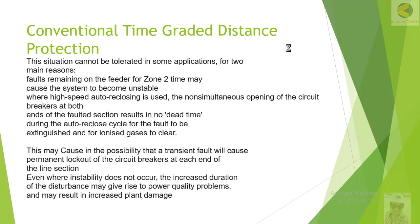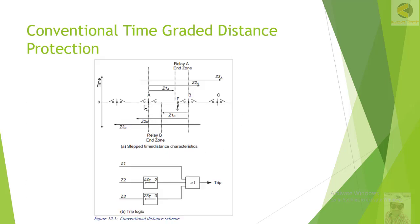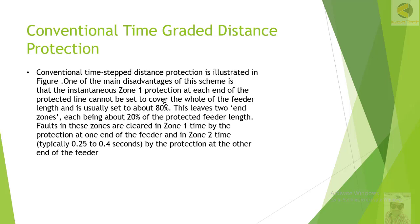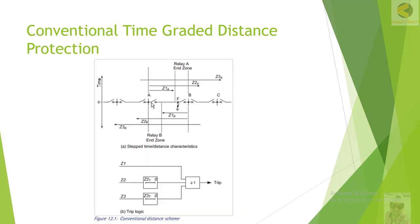Here you can see Zone 1 at Station A. This is the Zone 1 region, which is 80% of the line. The line is between A and B. So if there is a fault between A and B, let's explain why we are not taking Zone 1 as 100% of the line.